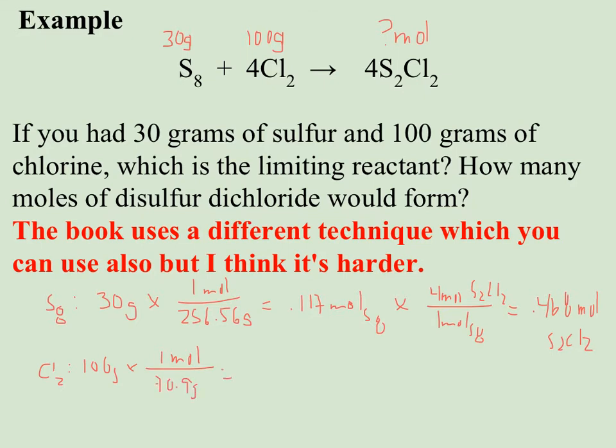So 100 grams is 1.41 moles. So then when I look at my balanced equation, I see I get four moles of S2Cl2 from four moles of chlorine. So this is also how many moles of S2Cl2 I can make.